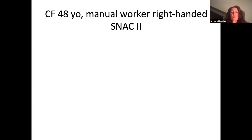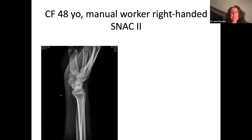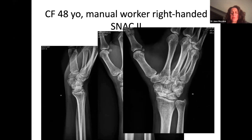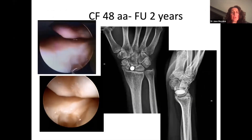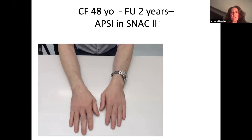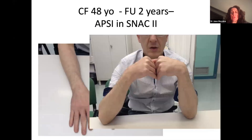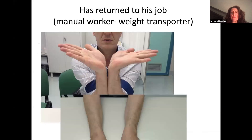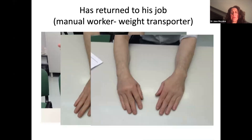Case one: a 48-year-old manual worker, right-handed, with SNAC stage 2 and a proximal pole scaphoid nonunion, initially planned for a four-bone fusion. At arthroscopy, the mid-carpal scaphocapitate joint was still good, so we chose to place an APSI implant and avoid the salvage procedure. At two-year follow-up, function is good, he returned to manual work without pain — a very good result.